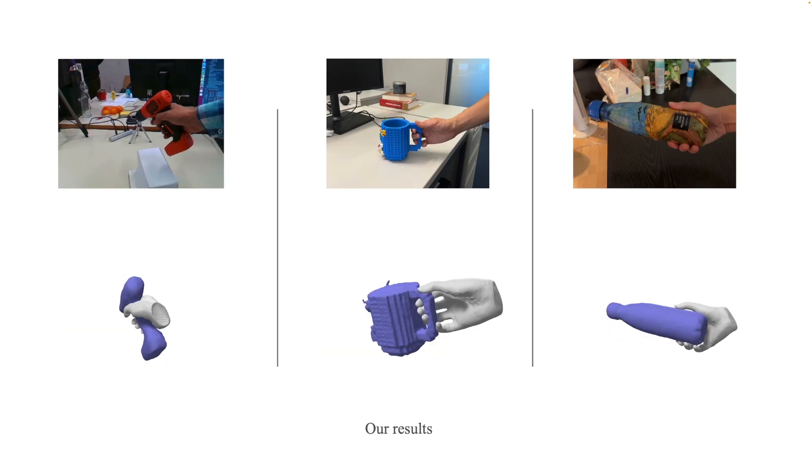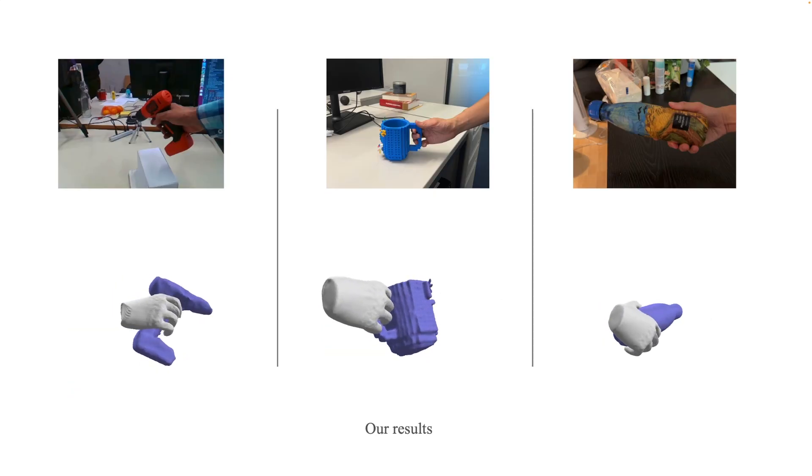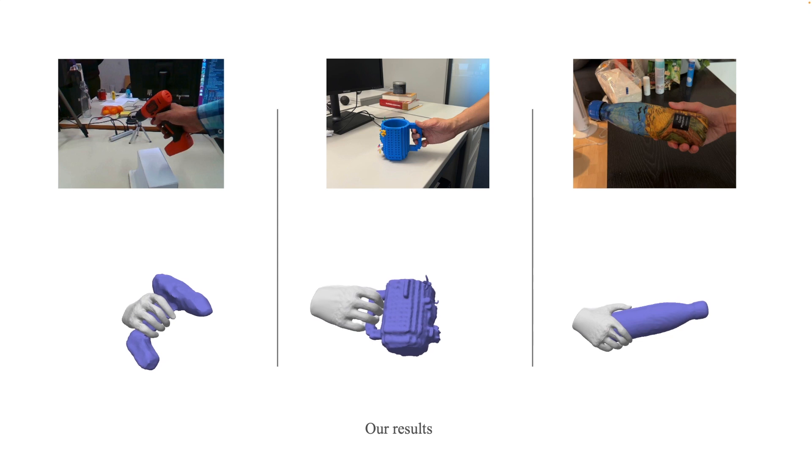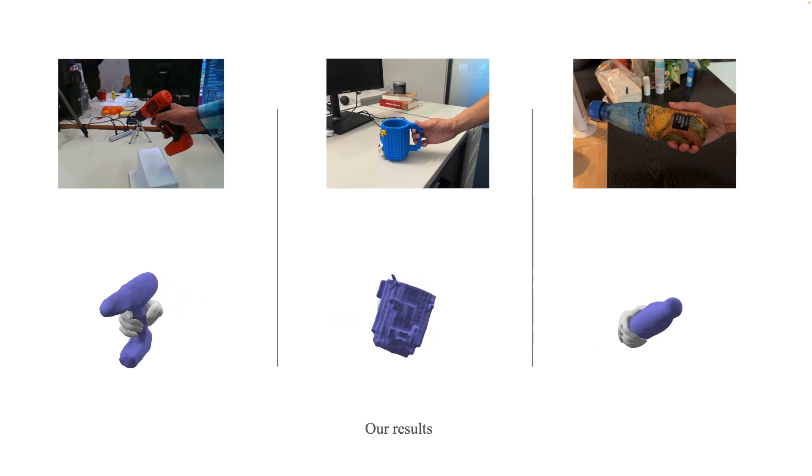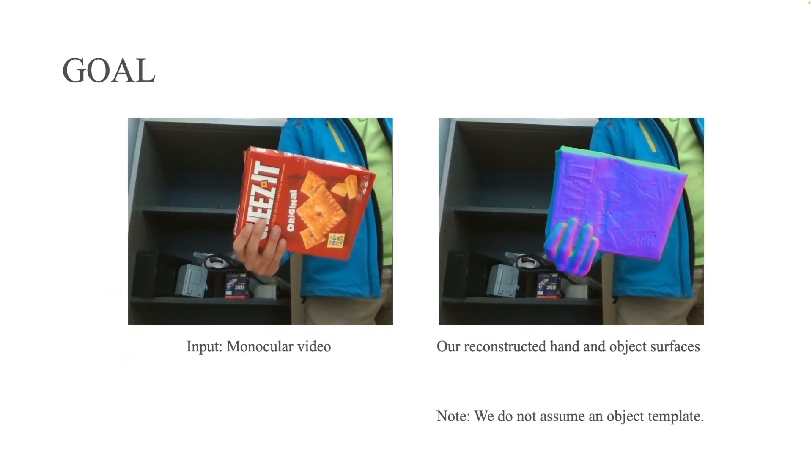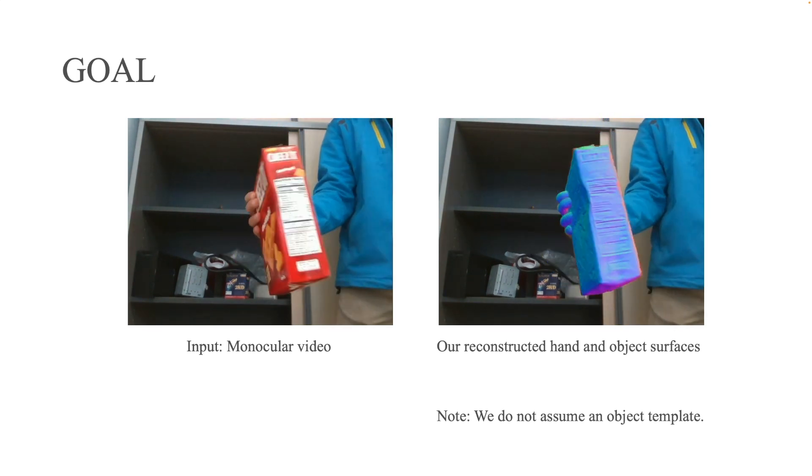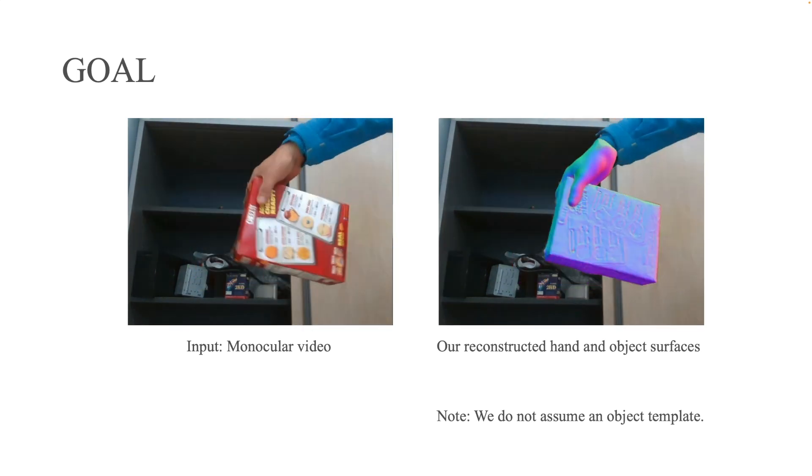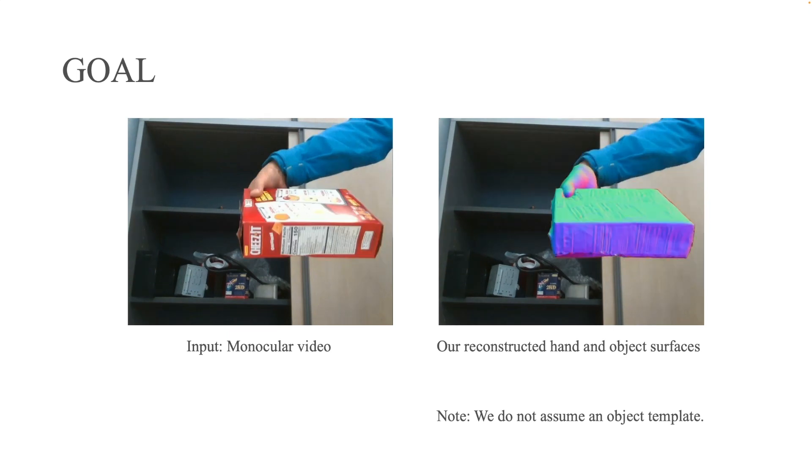To understand, model, and synthesize such interactions, it is critical to reconstruct the 3D object, the 3D hand, and the interaction between them. In this paper, our goal is to reconstruct hands and objects in 3D from only a monocular video, without a predefined object template.